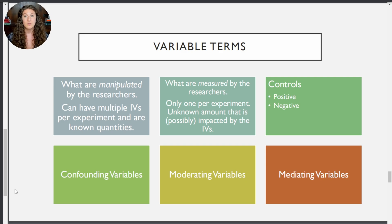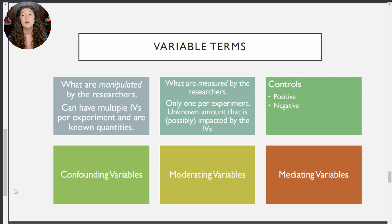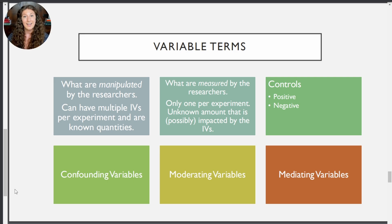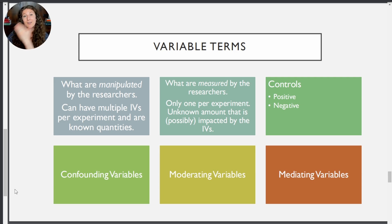A positive control is where we do expect some impact to happen. In our caffeine and students example, a positive control would be using an energy drink or some other caffeinated beverage that is similar to coffee but manifestly different in taste and feel — however, it still has the same amount of caffeine, so it should produce the same results. So a positive control is where we definitely should see results and compare that to our experimental value, while a negative control is where we expect not to see results and compare that to our experimental value.